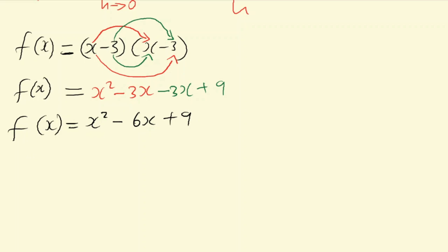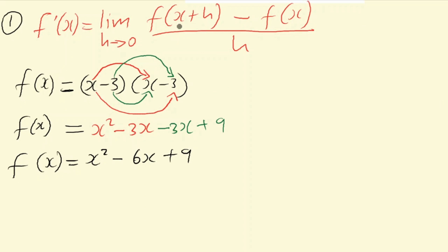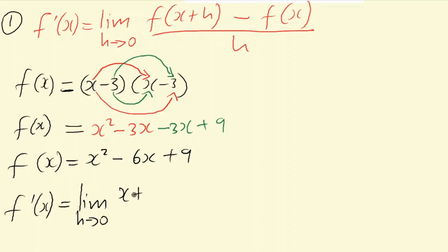Now we apply the first principles formula. Wherever there is x, we substitute x plus h. So x squared becomes x plus h squared, and minus 6x becomes minus 6 times x plus h. The constant 9 stays as 9 since there is no x next to it. So f prime of x equals the limit as h approaches 0 of: x plus h squared minus 6 times x plus h plus 9...